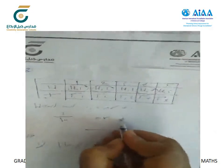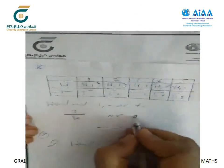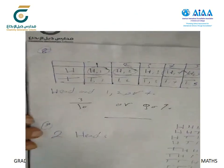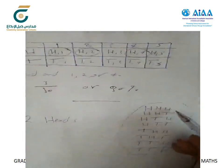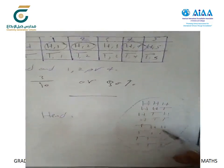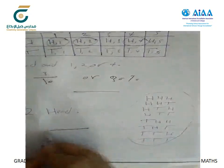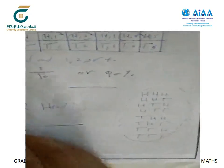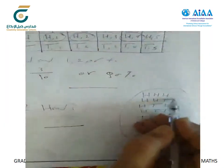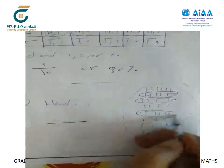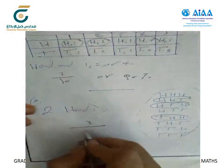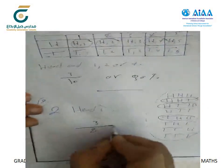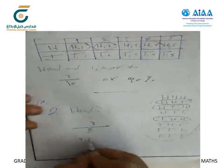Question number nine gives a sample space. The total outcomes are eight. The question asks about getting exactly two heads. Searching the sample space: heads-heads-tails, heads-tails-heads, and tails-heads-heads — three outcomes contain exactly two heads. The probability equals 3/8, or 37.5%.